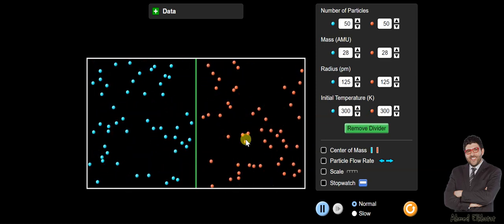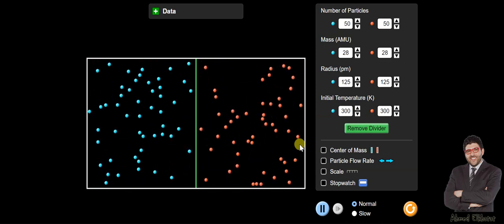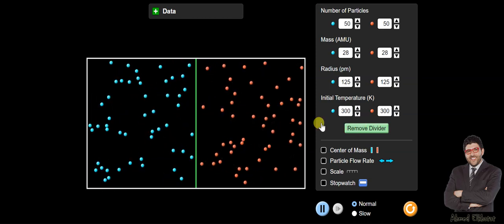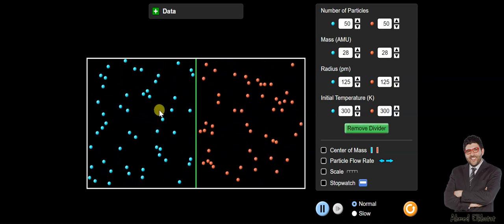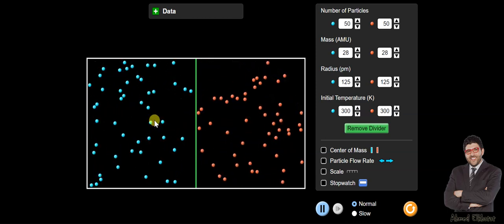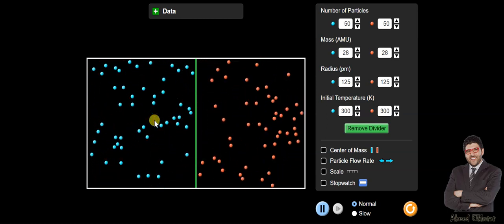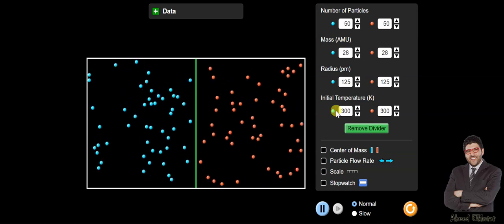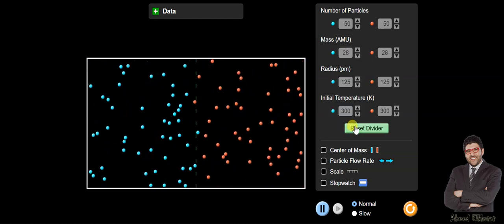So now if I remove the divider between them, A will diffuse through B and B will diffuse through A. This is my first case. I suppose my system is equimolar, so just remove the divider now.